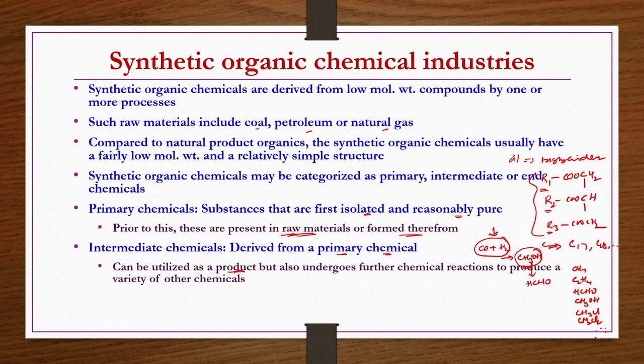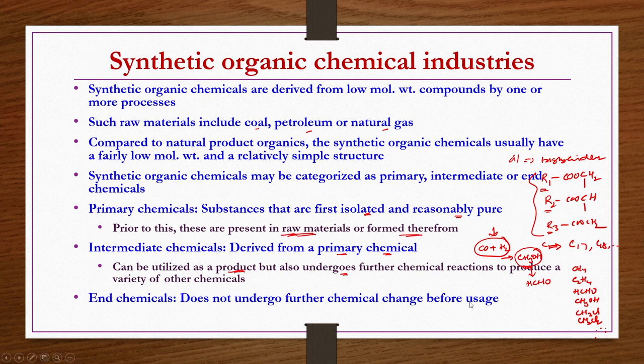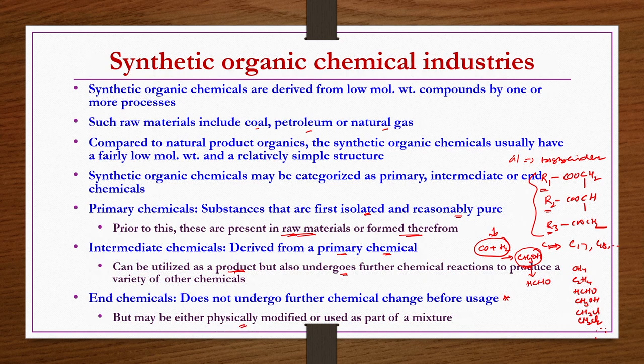Chemicals that can be utilized as a product but also undergo further chemical reactions to produce a variety of other chemicals are called intermediate chemicals. End chemicals do not undergo further chemical change before usage. These end chemicals may undergo physical modification or be part of a mixture. Based on the level of further conversion, synthetic chemicals are classified as primary, intermediate, and end chemicals.